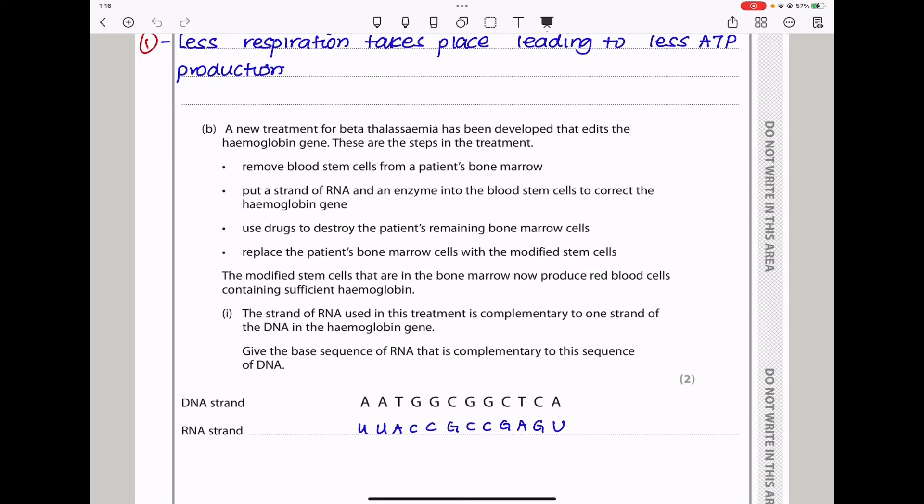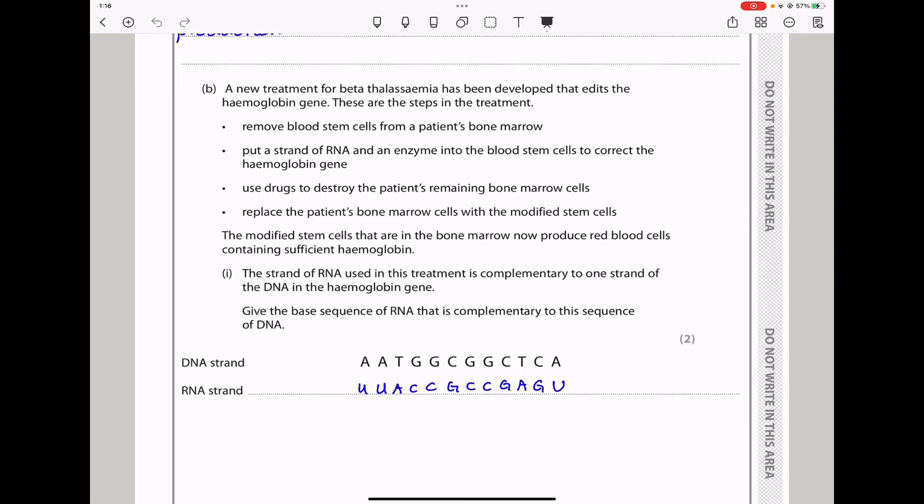The strand of RNA used in this treatment is complementary to one strand of DNA in the hemoglobin gene. Give the base sequence of RNA that is complementary to this sequence of DNA. Since this is a DNA strand, adenine will be complementary to uracil in RNA, thymine to adenine, guanine to cytosine, and cytosine to guanine. So, the RNA strand will be like that.